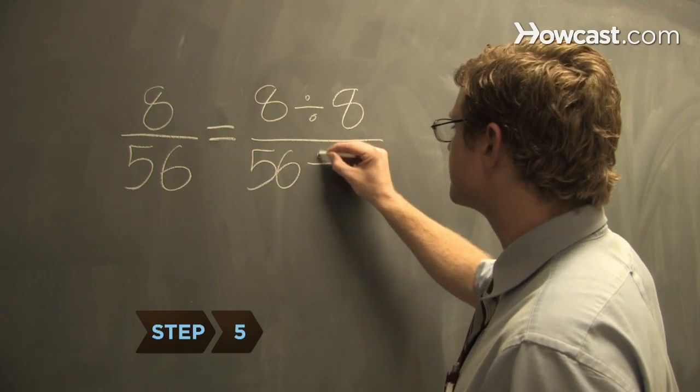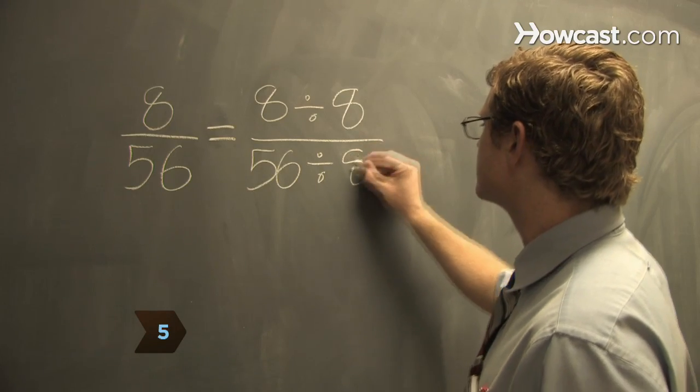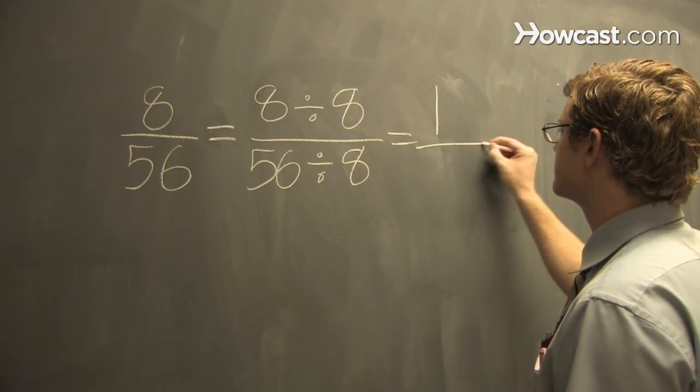Step 5. If necessary, reduce the fraction by dividing the numerator and denominator by the highest number you can.